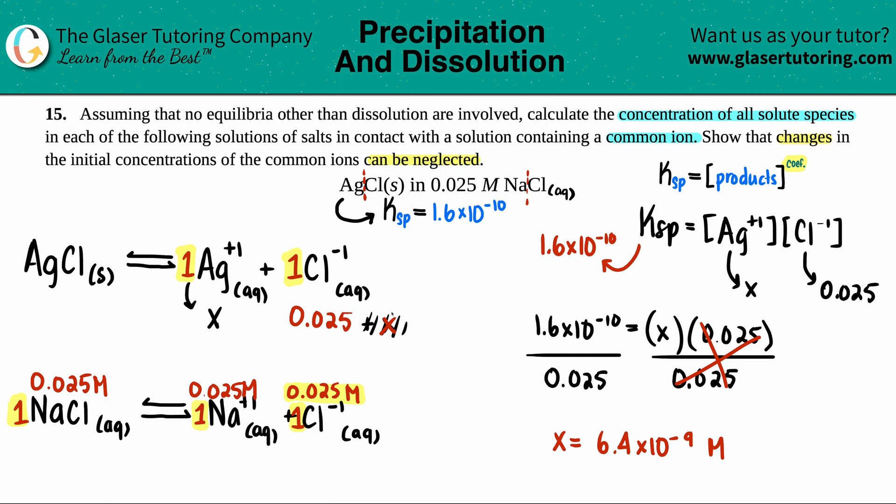Now, before we do that, we just have to make sure that this neglection is okay. We do the 5% rule. So 5% rule is when you take your x that you found and divide it by the initial amount, which was the 0.025. If our number is 5 or less, we're good. If it's more than 5, we have to go back and say, okay, I can't get rid of that plus x in my math. So 6.4 times 10 to the negative 9th divided by 0.025, we have to times it by 100 because it's a percent. This definitely is going to pass. Yeah, I get 2.56 times 10 to the negative 5th percent. Way lower than 5%. So as far as the checking, we're good. This checks out and the 5% rule is all good to go.